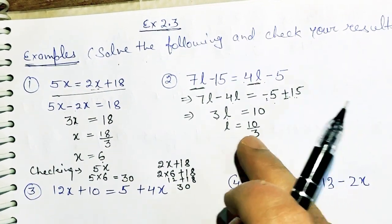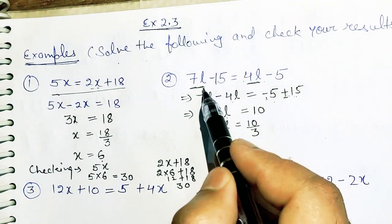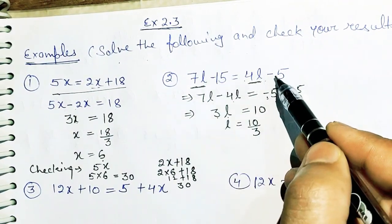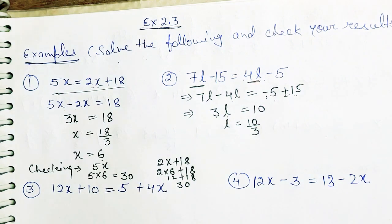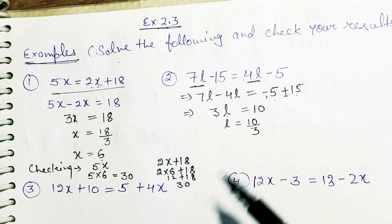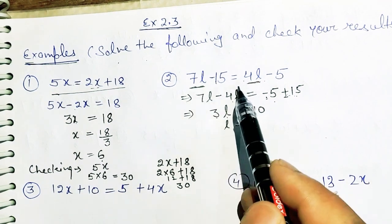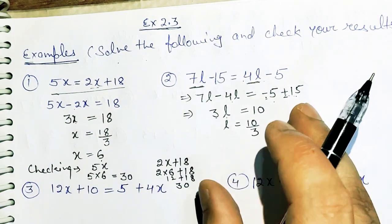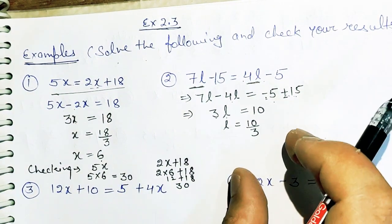You can check your answer by putting the value of L in the given question in both LHS and RHS. Whenever you put the value of any variable into the question, you will get the same answer on LHS and RHS. If you are getting different values, it means your calculation is wrong and you have to check your answer again.